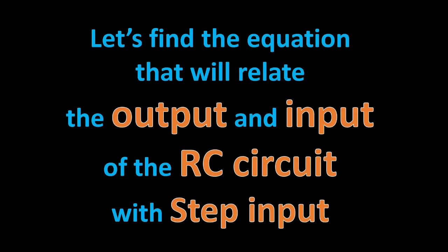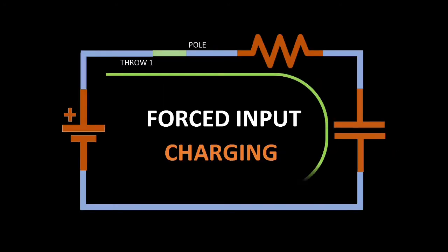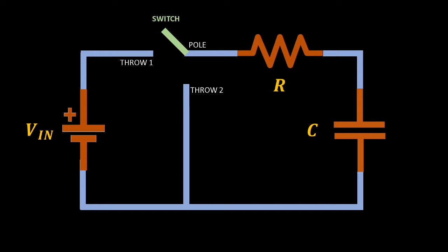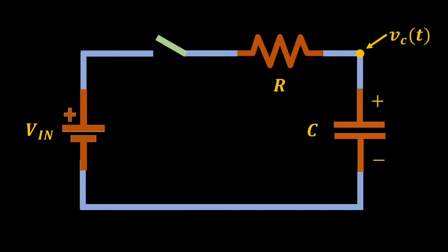Now it's time for us to derive the equation. Let's start with the step response of a charging phase. Let us assume that at time less than zero, our switch is not connected to either of the throw terminals of the switch. But at time equal to zero, that is the moment that we close the switch, and we will assume an initial condition to the voltage across the capacitor equal to output voltage V sub O. Now, we want to get the voltage across the capacitor as our output, denoted as V sub C as a function of time. We will also have current I of T flowing in the circuit when we close the switch.